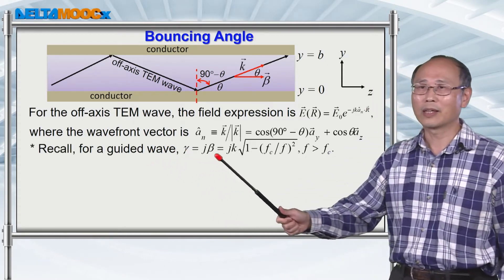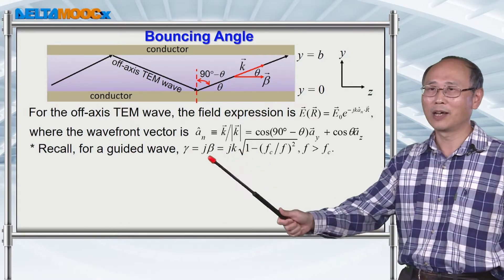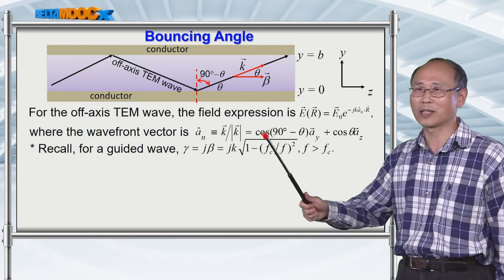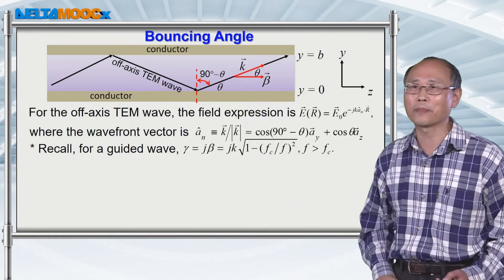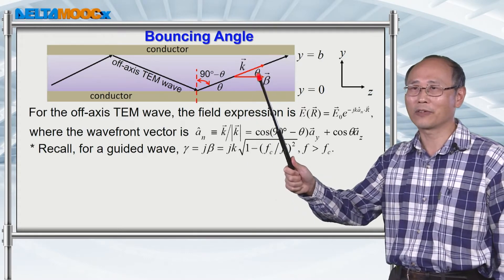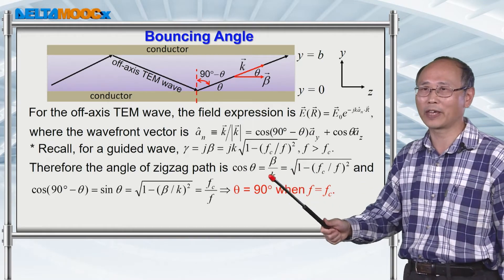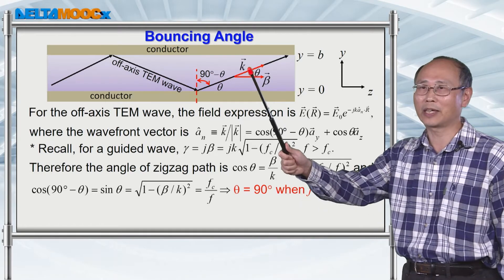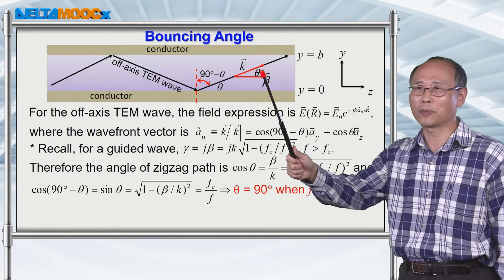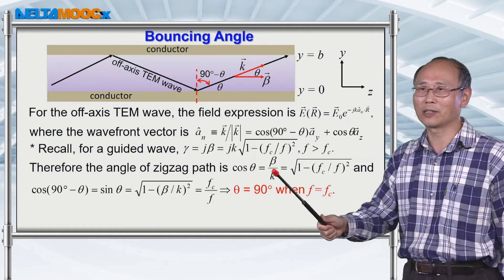We record the propagation constant from the last two sessions: β = k · √(1 − (fc/f)²). From the diagram, you notice that cosine θ is basically the ratio of β over k, because if you project k along the β direction, the angle you project down is equal to θ. So cosine θ equals β/k.